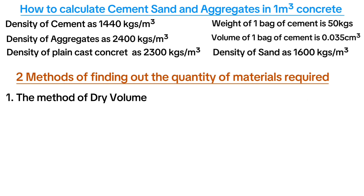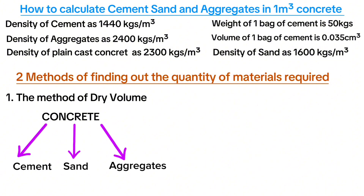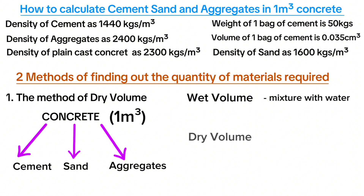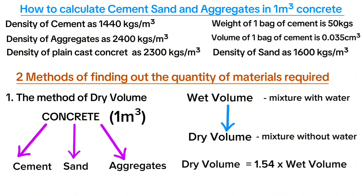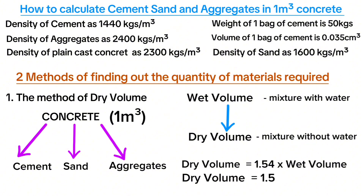With the method of dry volume, you separate the total volume of concrete into individual volumes of cement, sand and aggregates. You have the total volume as 1 cubic meter and find each component separately. Note that 1 cubic meter is a wet volume — wet volume is a mixture with water, whereas dry volume is a mixture without water, and what we purchase is dry volume. We convert wet volume to dry volume by multiplying by 1.54 (a constant). Therefore, dry volume equals 1.54 × 1 m³ = 1.54 cubic meters.